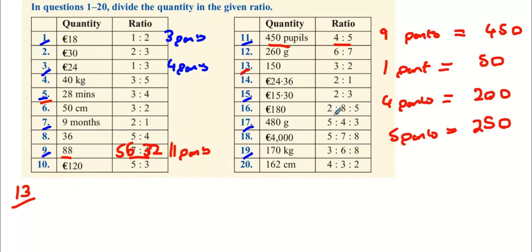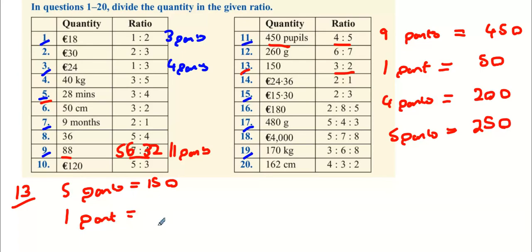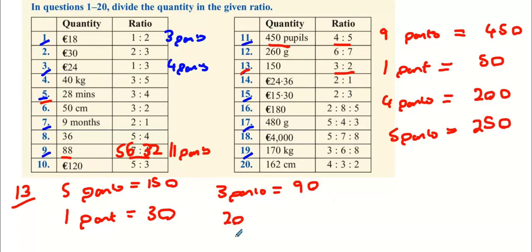Now we're on to question 13. Three plus two is five parts total, so five parts equals 150. You want to find out what one part is: one part is 150 divided by five, which is 30. Three parts would be three times 30, which is 90. And two parts will be two times 30, which is 60. So there's question 13 done.